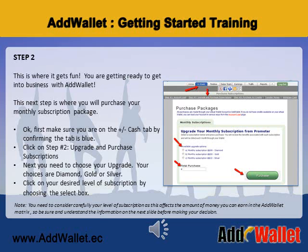Make sure you are on the Plus Minus Cash tab by confirming the tab is blue. Now click on Step 2: Upgrade and Purchase Subscriptions. Next, you need to choose your upgrade. Your choices are Diamond, Gold, or Silver. Click on your level of subscription by choosing the select box. Please note, you need to consider carefully your level of subscription as this affects the amount of money you can earn in the AdWallet matrix. Be sure and understand the information on the next slide before making your decision.